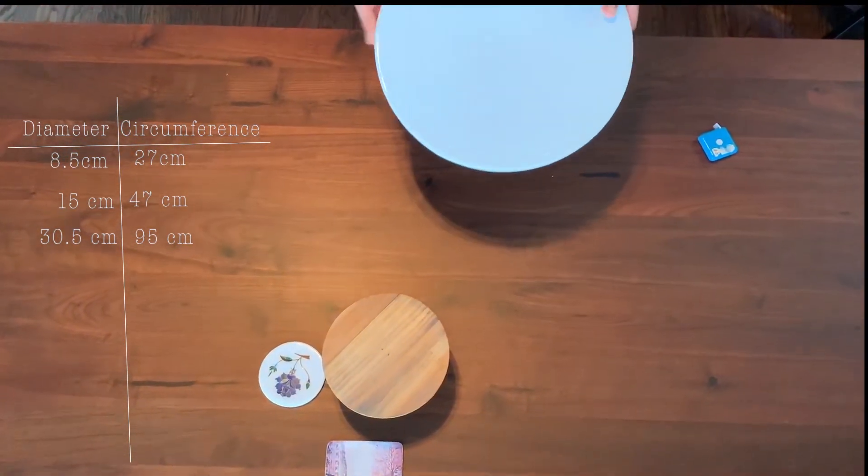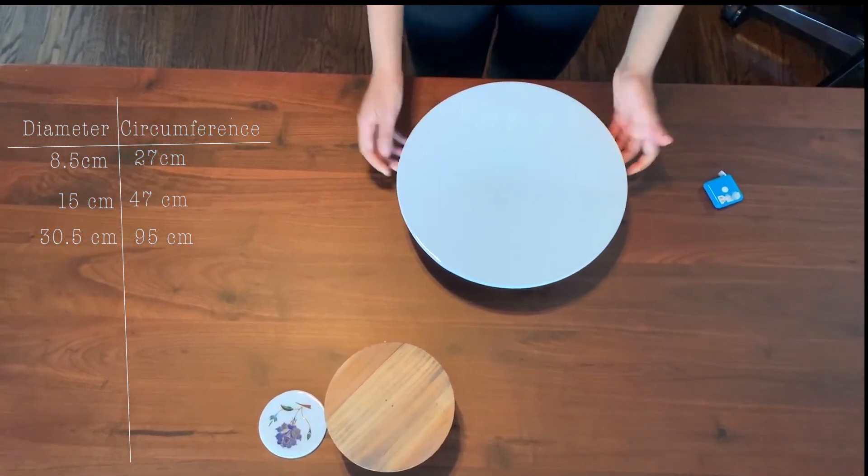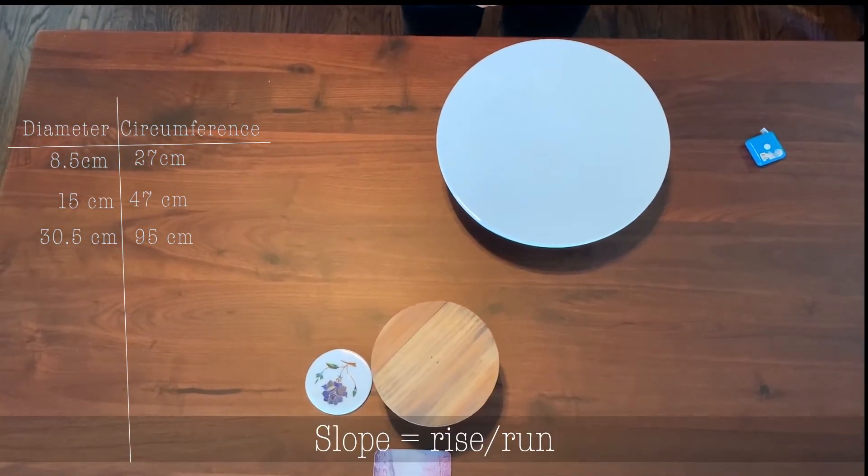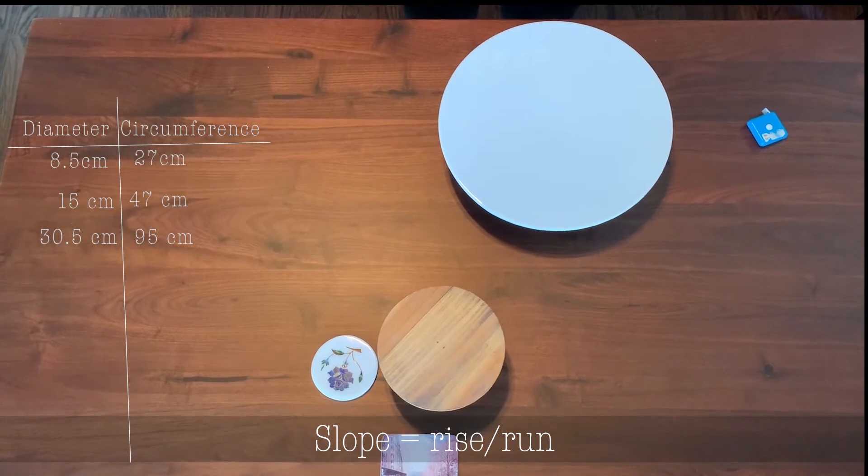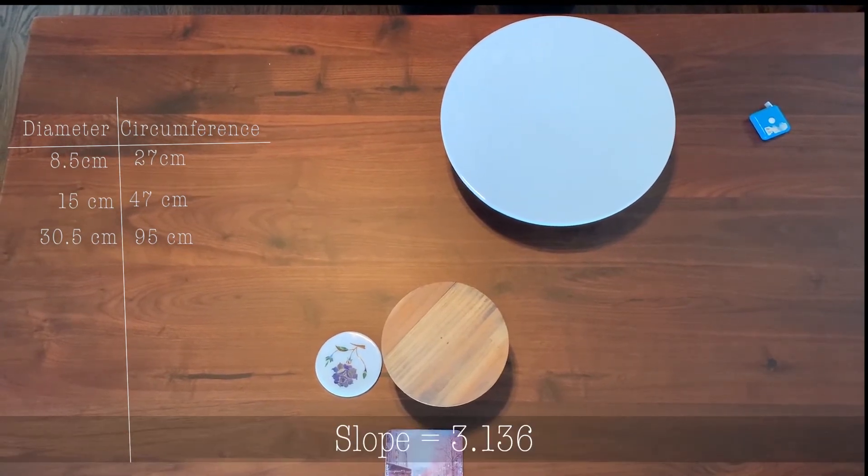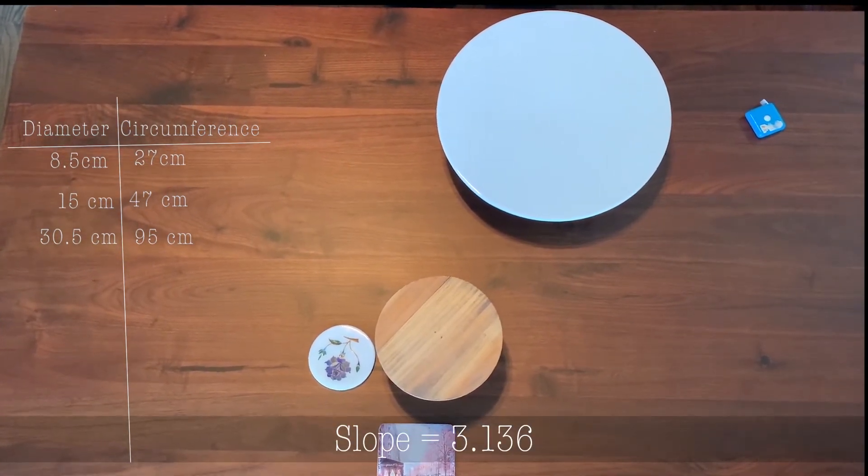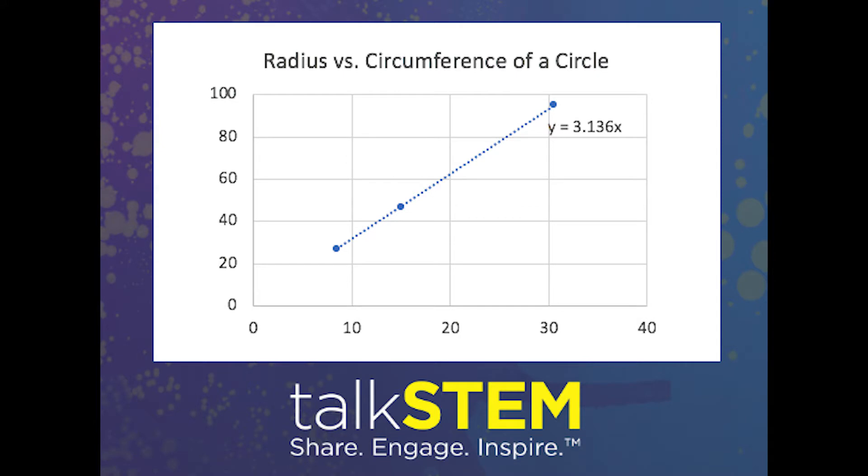So now, from looking at the data in our table and calculating the slope of our function, which is rise over run, we find that the slope of our line is around 3.136, meaning that for every one centimeter increase in diameter, the circumference increases by 3.136 centimeters. This is actually very close to the number 3.14, which is the constant pi. As a matter of fact, the mathematically proven relationship between the circumference and diameter is that the circumference is equal to pi times the diameter.